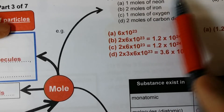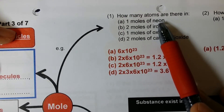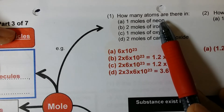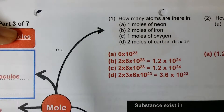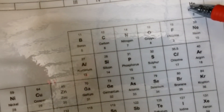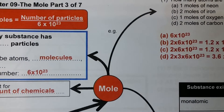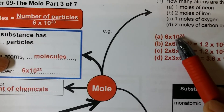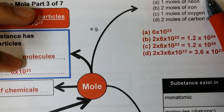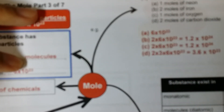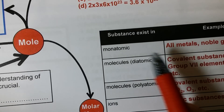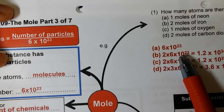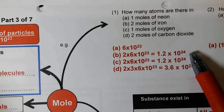How many atoms are there in one mole of neon? Neon is in group 0 — all group 0 elements are noble gases that exist in monatomic form. So one mole of neon would have 6 × 10²³ neon atoms. How about two moles of iron? Iron is a metal, so it exists as atoms. Two moles of iron would have 2 × 6 × 10²³ iron atoms.